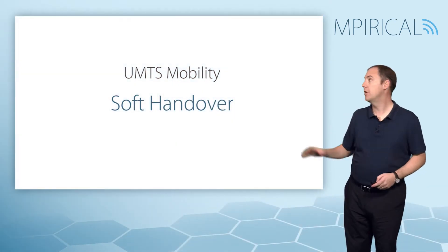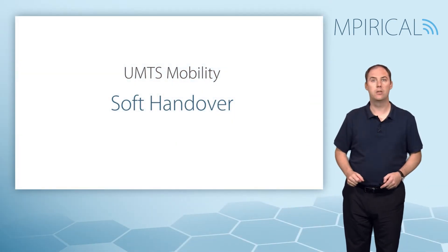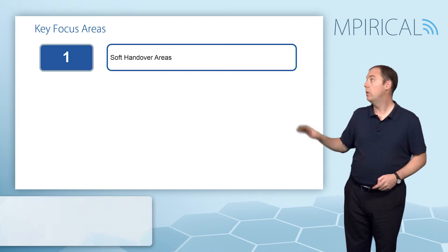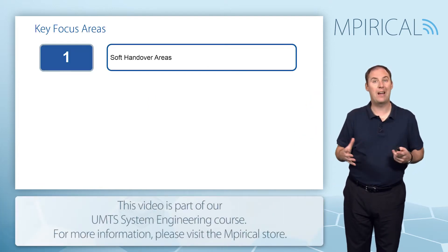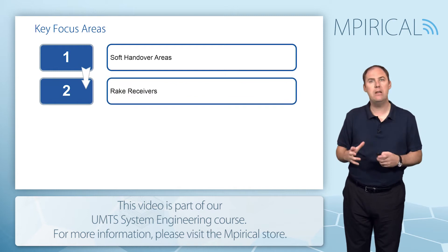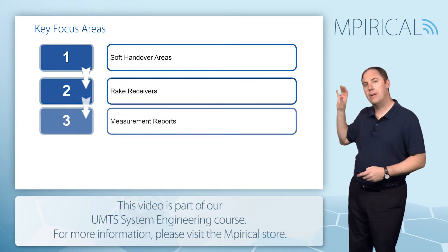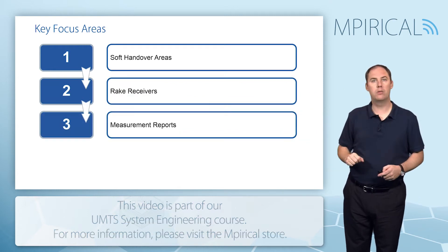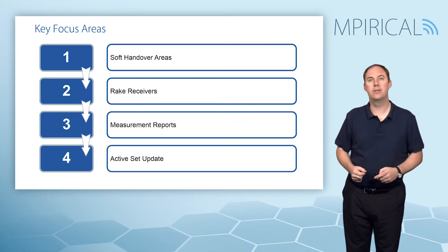In this video we're going to discuss the UMTS soft handover procedures. We're going to start by looking at what we mean by soft handover areas. We'll look at how the rake receiver gets involved in soft handover, the measurement reporting process, and finally the end-to-end procedure of doing a soft handover.